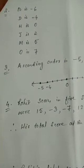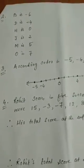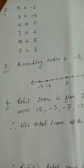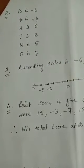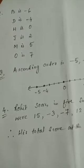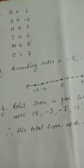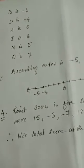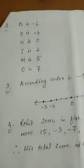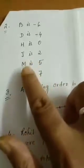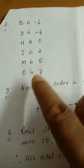Now see question number 2. Again, a number line is drawn and letters are marked from A to O. The integers minus 3 and minus 2 are marked by points E and F respectively. You have to say which integers are marked by points B, D, H, J, M and O. So here, B is minus 6, D is minus 4, H is 0, J is 2, M is 5, and O is 7.